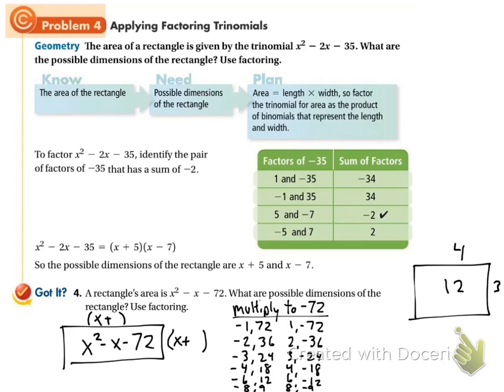A lot of pairs but now we're looking for the one that adds to be this middle number. This middle number here is a negative 1, right, if there's not a number written in front of the x, that's 1. So we're looking for the one that adds to negative 1. That's going to be this last pair here, 8 and negative 9.